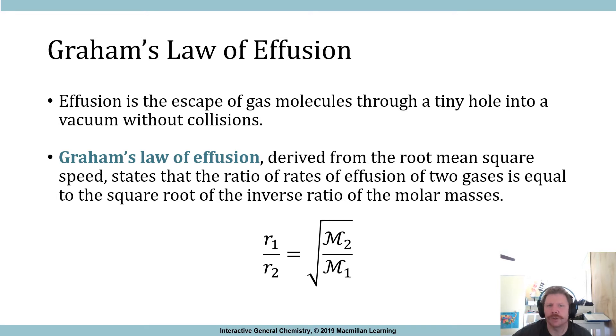Graham's law of effusion is derived from the root mean square speed, which states that the ratio of the rates of effusion of two gases is equal to the square root of the molar mass of two over molar mass one.